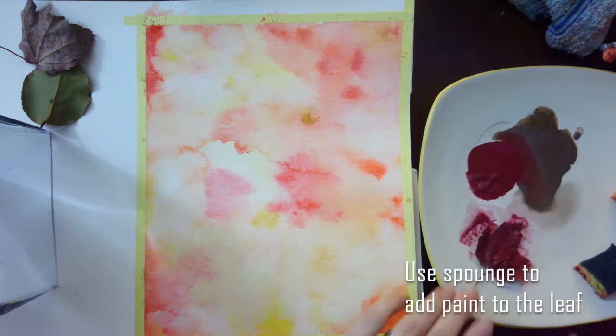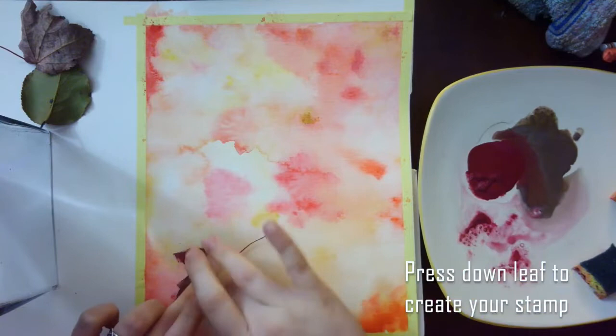Take a leaf, dip your sponge in paint, paint the leaf, and then press it down on the paper, and you have your stamp.